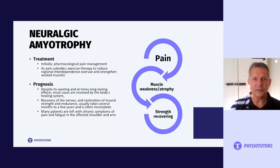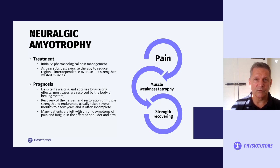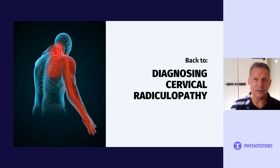Initial treatment for neurologic amyotrophy is pharmacological pain management. As that pain subsides, patients might be referred back for exercise therapy to reduce regional independence overuse and re-strengthen the wasted muscles due to neuropathic pain. The prognosis is relatively good. Despite its wasting and long-lasting effects, most cases are resolved by the body's healing system in addition to specific strength retraining. Recovery of nerves and restoration of muscle strength will take several months to even a few years, and many patients are left with slight chronic symptoms of pain and fatigue in the affected shoulder and arm.